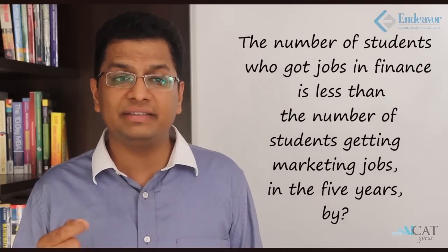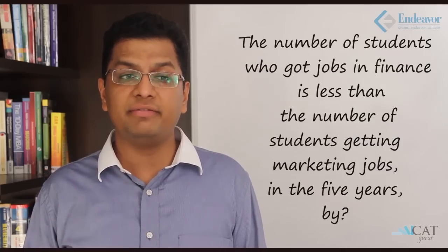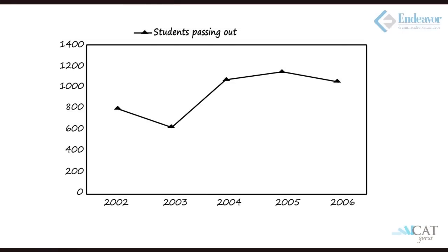The question asks: the number of students who got jobs in finance is less than the number getting marketing jobs — find this difference over five years. We need to identify the total student strength for each year from the line graph. In 2002 it's approximately 800, in 2003 around 600, in 2004 around 1100, in 2005 slightly less than 1200 so we assume 1150, and in 2006 close to 1000.